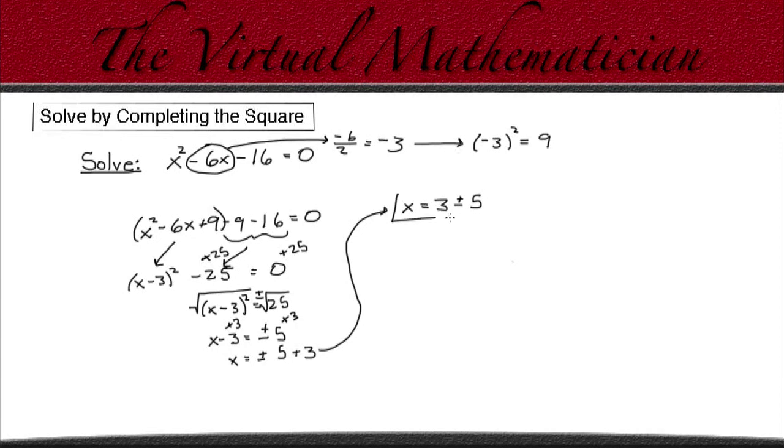Ok, so these are the two values of x that make our polynomial equal 0. So the first value is x equals 3 plus 5. And we can simplify that to x equals 8. And the second value is x equals 3 minus 5. And we can simplify that to x equals minus 2.